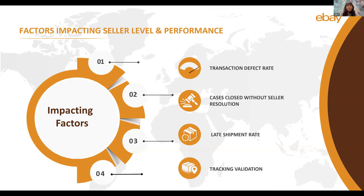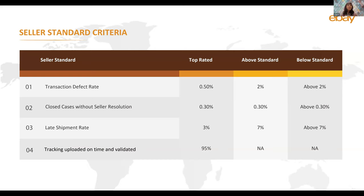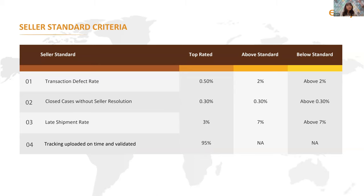Now that we have understood the factors, let's look at the set criteria eBay has established that you need to maintain to keep your level on top. As you can see on the screen, the standard criteria include transaction defect rate, cases closed without seller resolution, late shipment rate, and tracking uploaded on time. To stay above standard, your transaction defect rate must not go beyond 2%, cases closed without seller resolution must not go beyond 0.30%, and your late shipment rate must not go beyond 7%. Anything beyond these thresholds will make you fall under below standard.